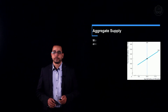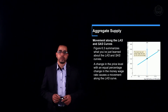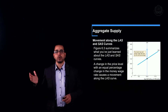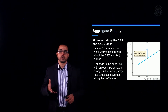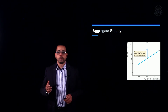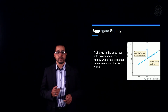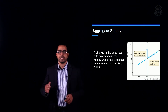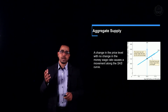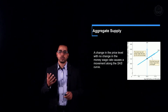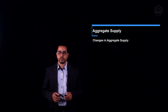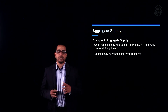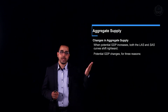When there is a change in the price level, there will be no change in the long-run aggregate supply, because it represents potential GDP. However, there will be movement along the short-run aggregate supply curve — upward if there is an increase in price level, or downward if there is a decrease. Now let's talk about shifting the aggregate supply curves. When potential GDP increases, this leads to an increase in both long-run and short-run aggregate supply.